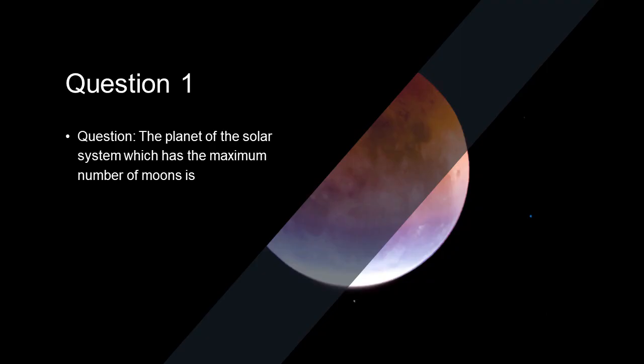Question 1: The planet of the solar system which has the maximum number of moons is Jupiter.